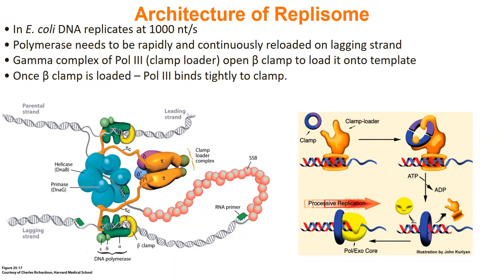To answer the replisome structure question: you have a helicase (DnaB) unzipping DNA. Attached to that helicase is a primase (DnaG) laying down RNA primers. These are connected to your polymerase — one for the leading strand, one for the lagging strand. This is all connected to the clamp loader, which loads the beta clamp onto the lagging strand so you can continually make Okazaki fragments. That's the structural picture I'd expect you to know for the replisome.